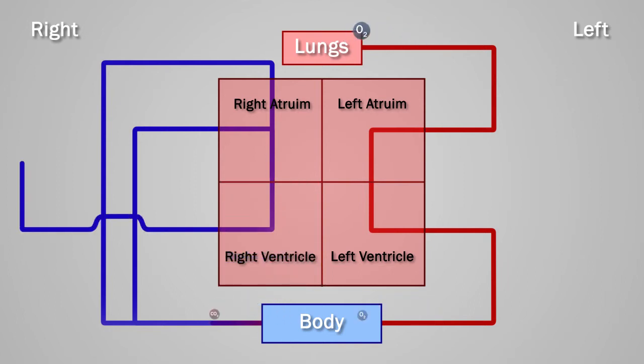Once the blood enters the pulmonary trunk, it travels towards the lungs. Along the way, the pulmonary trunk branches into the left and right pulmonary arteries. As the pulmonary arteries reach the lungs, carbon dioxide is released from the arteries and oxygen enters the pulmonary veins. This process is called external respiration.